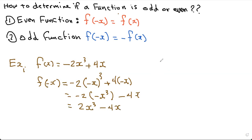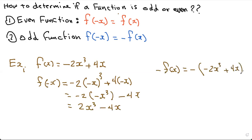Now let's find negative f of x. To find negative f of x, you just throw a negative in front of the whole function and put it in brackets. That gives you: negative and negative is positive, and negative times positive is minus 4x. So negative f of x gives us positive 2x cubed minus 4x.